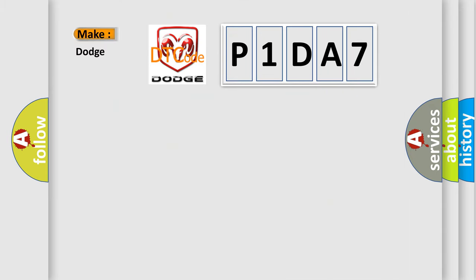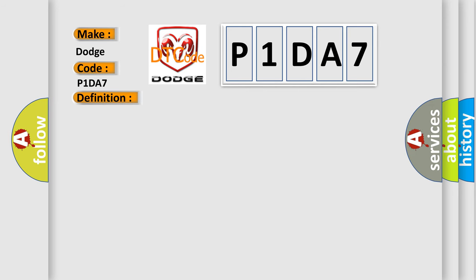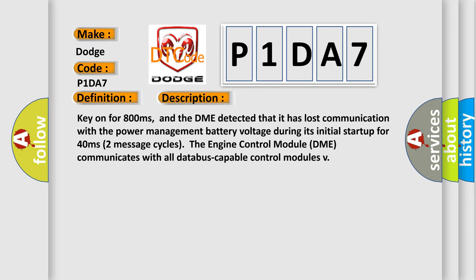So, what does the diagnostic trouble code P1DA7 interpret specifically? For Dodge vehicles, the basic definition is: Lost communication with power management battery voltage. This is a short description of this DTC code: key on for 800 milliseconds, and the DME detected that it has lost communication with the power management battery voltage during its initial startup for 40 milliseconds.